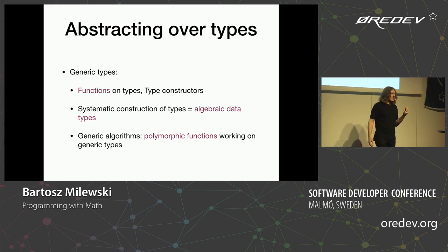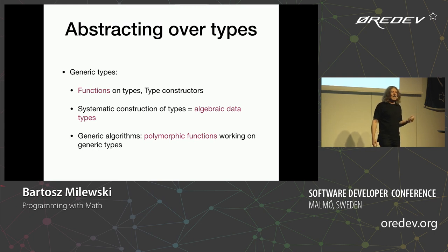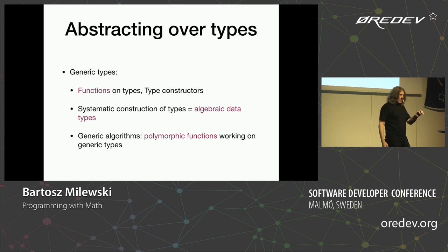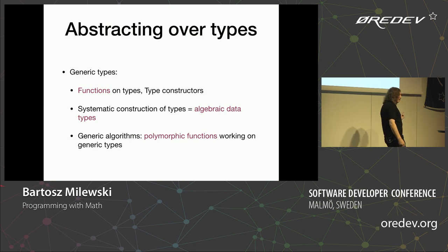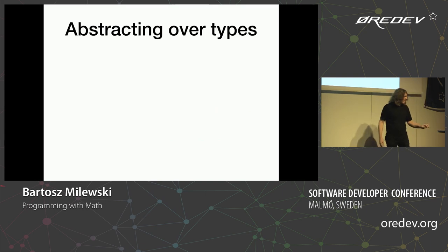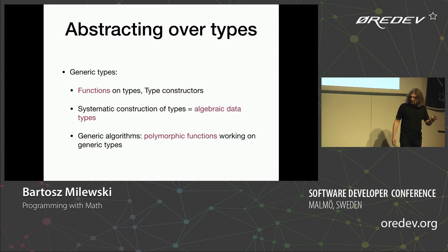You have to be able to construct types from types — you need functions on types. An example from C++: vector is really a function on types. It takes type T and creates a type vector of T. You can apply this function to a particular type and get a vector of ints or a vector of booleans. The vector from the standard library is really a function on types, or a type constructor.